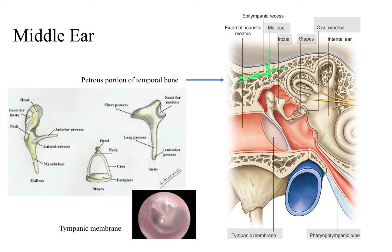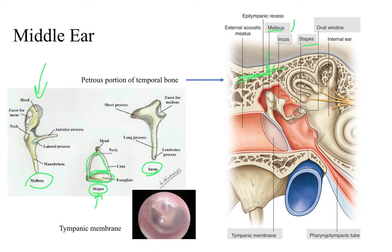Attached to the tympanic membrane you have the first of the three ossicles that are responsible for transmitting vibrations from the tympanic membrane to the organs for hearing. Those are called the malleus — this bone right here — the incus, which is the second bone right here, and the stapes, which is the third bone right here. The stapes looks like a wishbone with an oval attached to it, and it's going to be attached to the oval window leading into the internal ear.